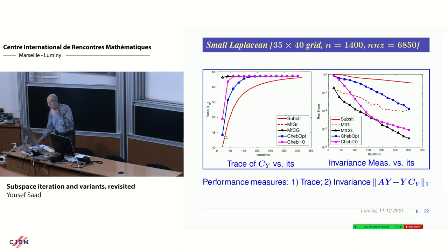This is subspace iteration. This one is Chebyshev, the optimal Chebyshev, the one that's classical. This one is the one for which I found my optimal shift. It's not the best one from theory because it's a subspace, we're not looking at one specific eigenvalue. Here you have a different measure. That measure is the invariance. Again, you see here, the gradient is the pink one. Conjugate gradient is black at the top. Then you have subspace iteration here, Chebyshev gradient.